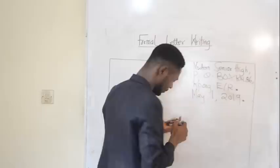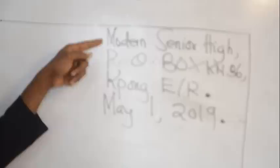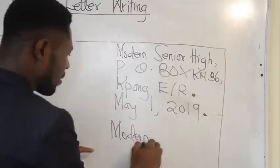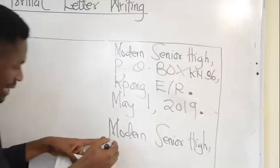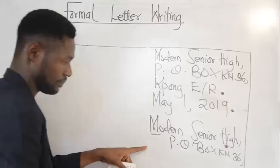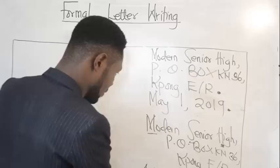Now let's see if what we've written is correct regarding the address. This is the block address — all of them on the same line. We could also have another format: Modern Senior High School — note it's in small letters but you capitalize the initials — then P.O. Box, 36, the place. Full stop. The date comes under, so it becomes 1st May 2019. Full stop.